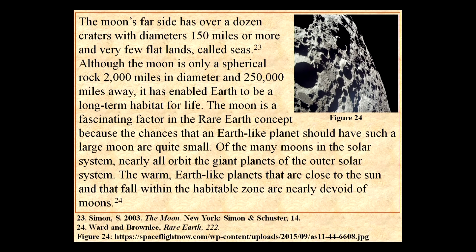Although the moon is only a spherical rock 2,000 miles in diameter and 250,000 miles away, it has enabled Earth to be a long-term habitat for life. The moon is a fascinating factor in the rare Earth concept, because the chances that an Earth-like planet would have such a large moon are quite small. Nearly all moons in the solar system orbit the giant planets of the outer system, and warm Earth-like planets within the habitable zone are nearly void of moons.